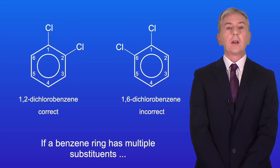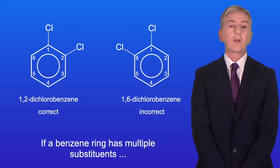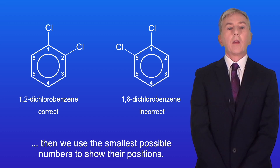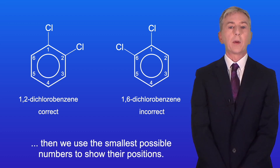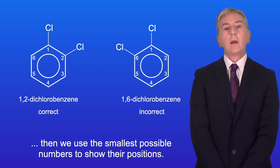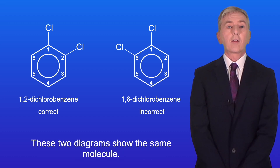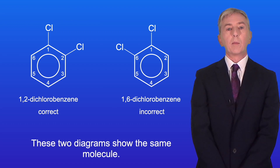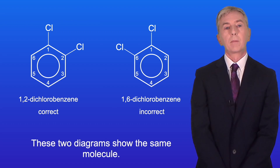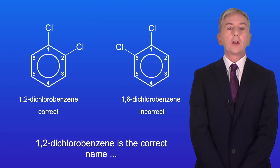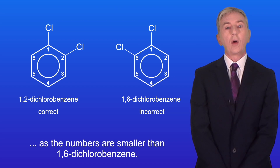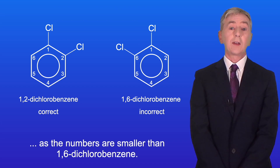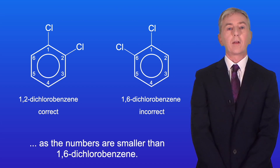Now if a benzene ring has multiple substituents, then we use the smallest possible numbers to show their positions. These two diagrams show the same molecule. 1,2-dichlorobenzene is the correct name, as the numbers are smaller than 1,6-dichlorobenzene.